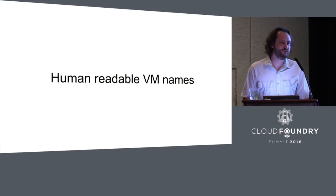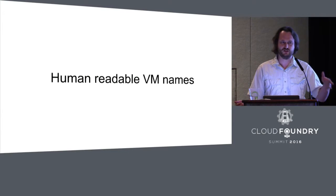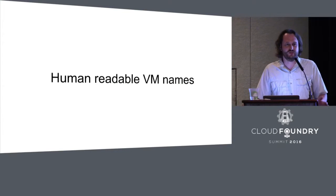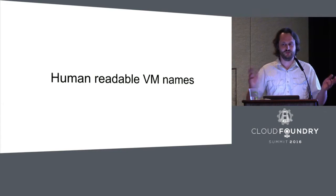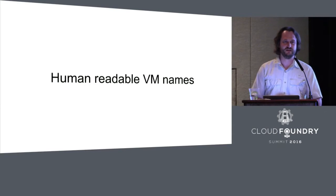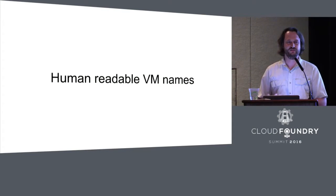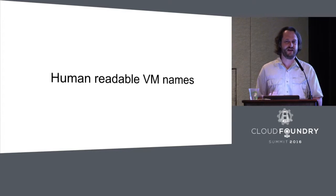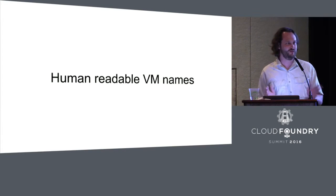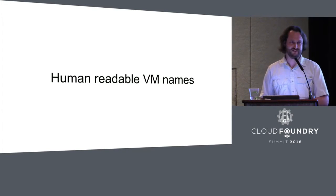Another feature: human-readable VM names. Like in AWS on the console you see things like runner/zero, runner/one. On OpenStack it was VM-dash-some-UUID, not really helpful, and we wanted to change that. Unfortunately, the agent on OpenStack VMs is configured to actually use the name to look up metadata in the registry, so that was a bit harder, but we found a workaround. The pipeline went green. It just didn't work.